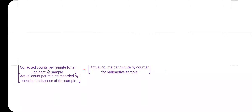Measured counts are always corrected for background counts. The corrected counts per minute for a radioactive sample equals the actual counts per minute recorded by the counter for the radioactive sample minus the actual counts per minute recorded in the absence of the sample. Subtracting these two gives the corrected counts per minute. This concludes the discussion on the Geiger-Muller counter.